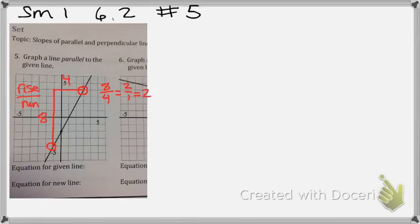In other words, what I should have been able to do is just go up two over one. I could have done that at every lattice point, up two over one.